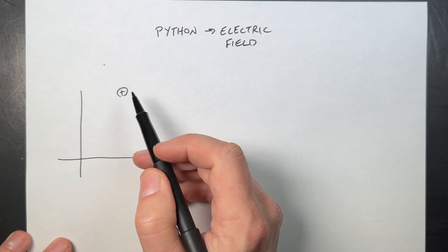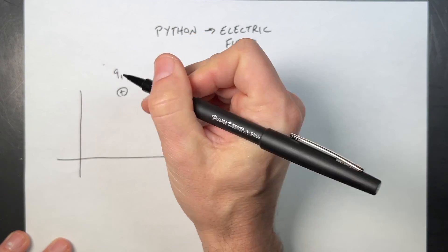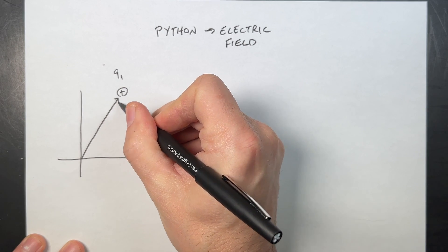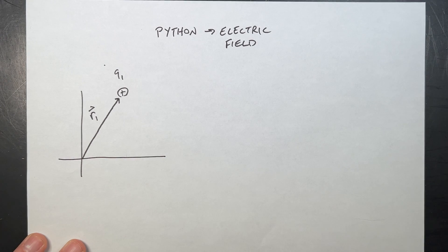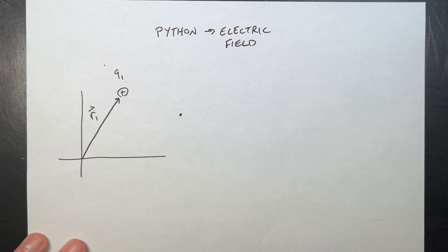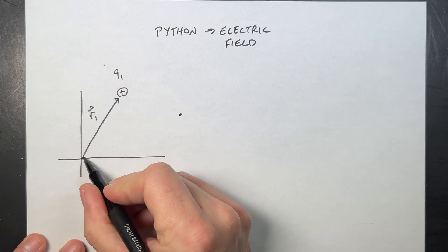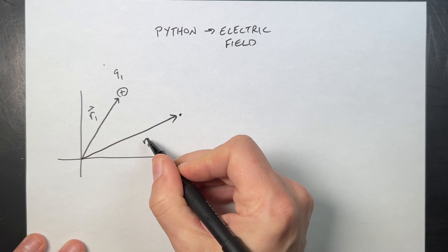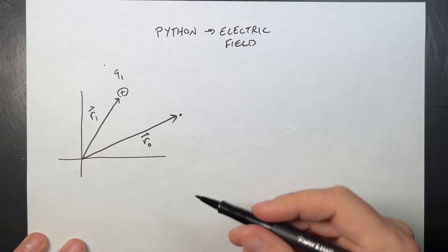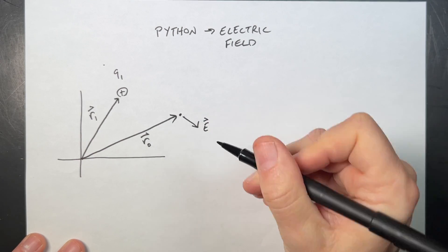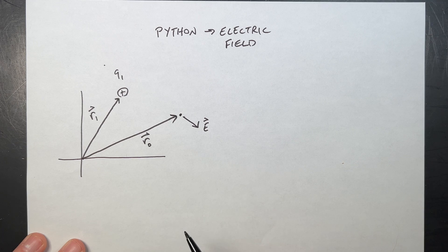Imagine that I have a single charge right here. Let's call it Q1. It's located at a vector position R1 — that could be anywhere in the XYZ coordinate system. Now I want to find the electric field at this location over here, and I'm going to call that the observation location. That has a vector location R0.